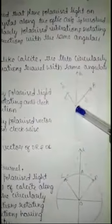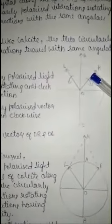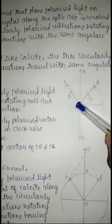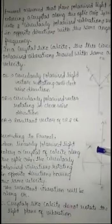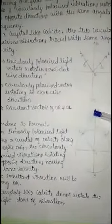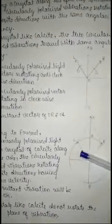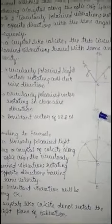In this figure, OR is the circularly polarized vector rotating in the clockwise direction and OL is the circularly polarized vector rotating in the anticlockwise direction. The resultant of these two vectors OR and OL is along OA. According to Fresnel, when linearly polarized light enters a crystal like calcite along the optic axis, the circularly polarized vibrations rotating in opposite directions have the same velocity, so the resultant of these two vectors will be along OK. Therefore, crystals like calcite do not rotate the plane of vibration.